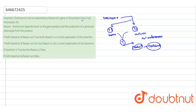This assertion is true because in dominance, genes are responsible for forming a product in the form of protein, and the protein is commonly observable as a phenotype. The reason is also true — dominance depends much on the gene product, and the gene product causes a particular phenotype.